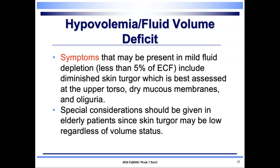Symptoms will present when an individual has mild fluid depletion — less than five percent of their extracellular fluid. They will present with decreased skin turgor, which is best assessed in the upper torso, dry mucous membranes, and oliguria — decreased urine output. Special consideration should be given to elderly patients, since skin turgor may be low regardless of their volume status.